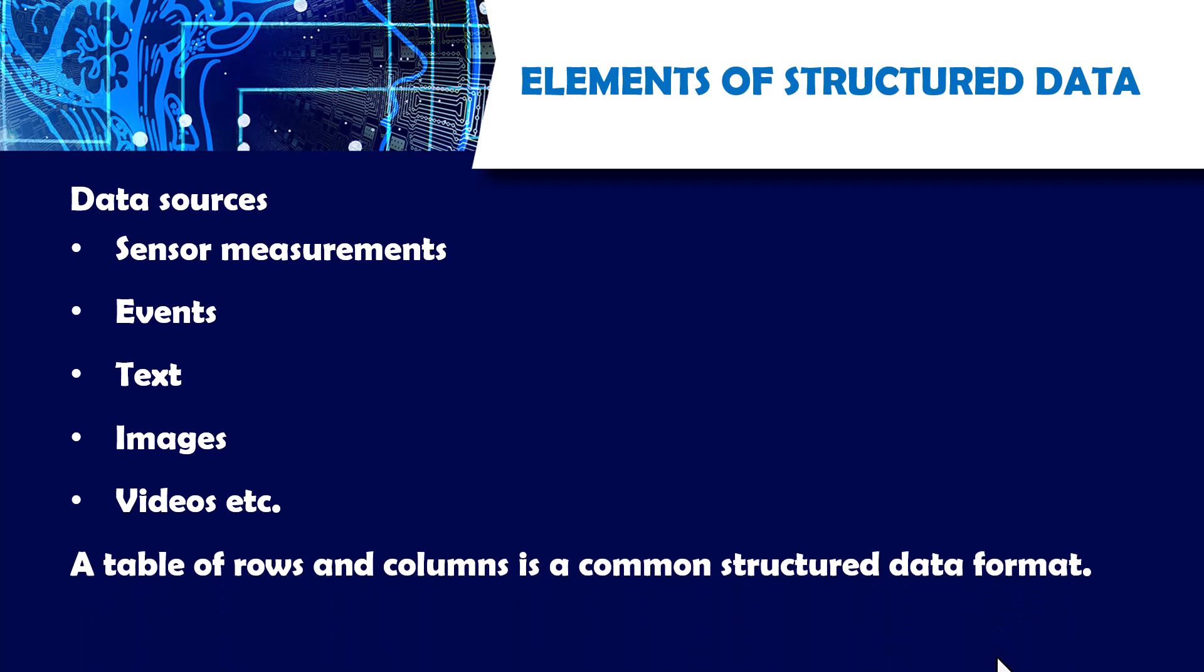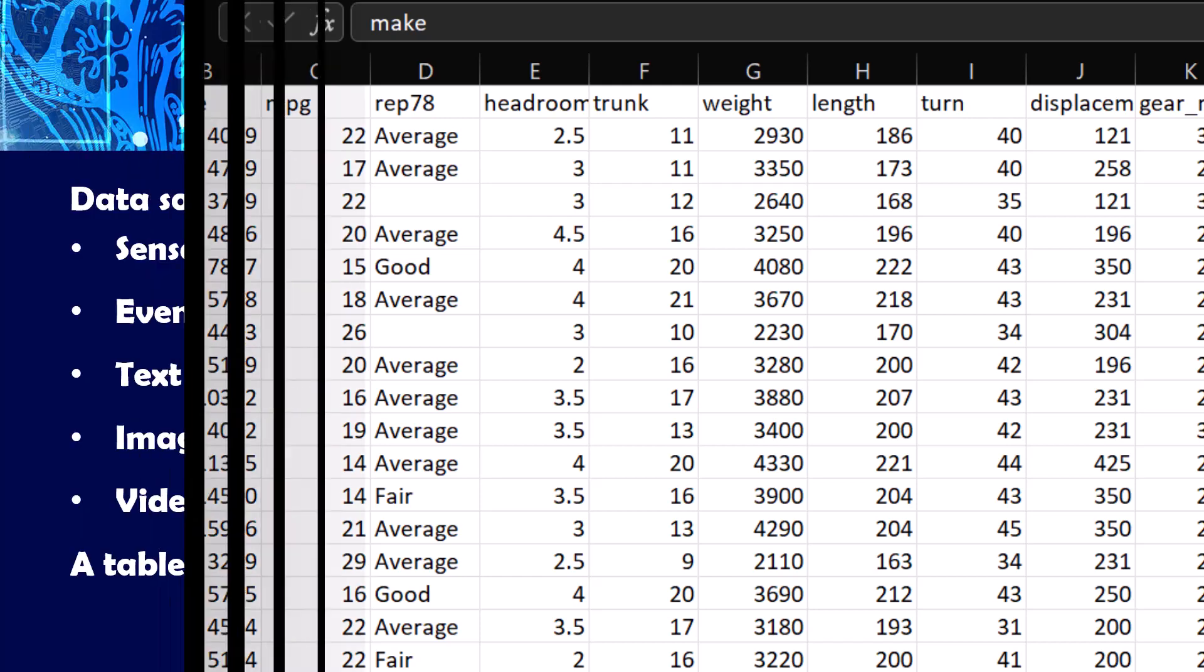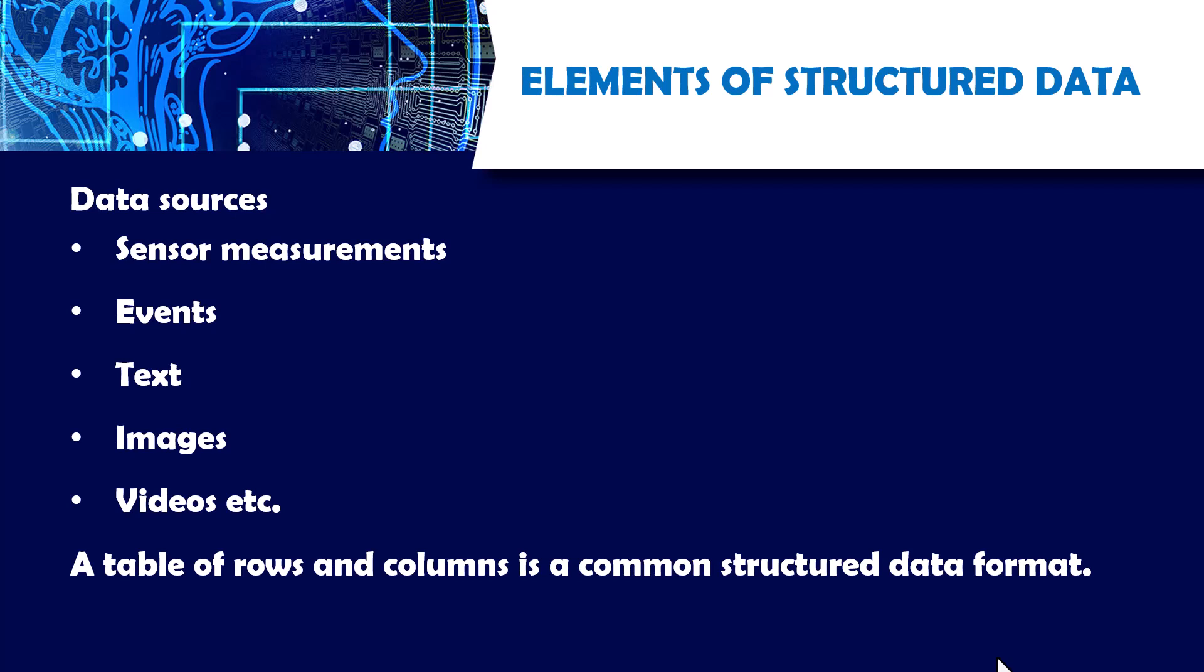A table of rows and columns is a common structured data format. For example, I would give you an example of Excel that you know, or data frame in Python or R. It would be a common structured data format.